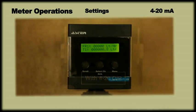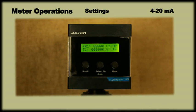Let us first understand the settings for 4-20 mA. In case your meter has 4-20 mA output, the default 0 and span setting can be viewed by pressing scroll key.